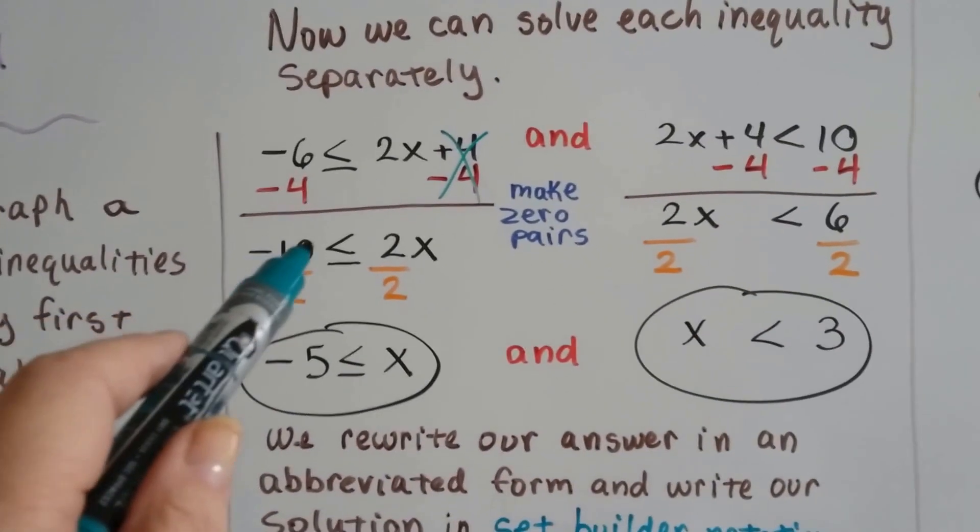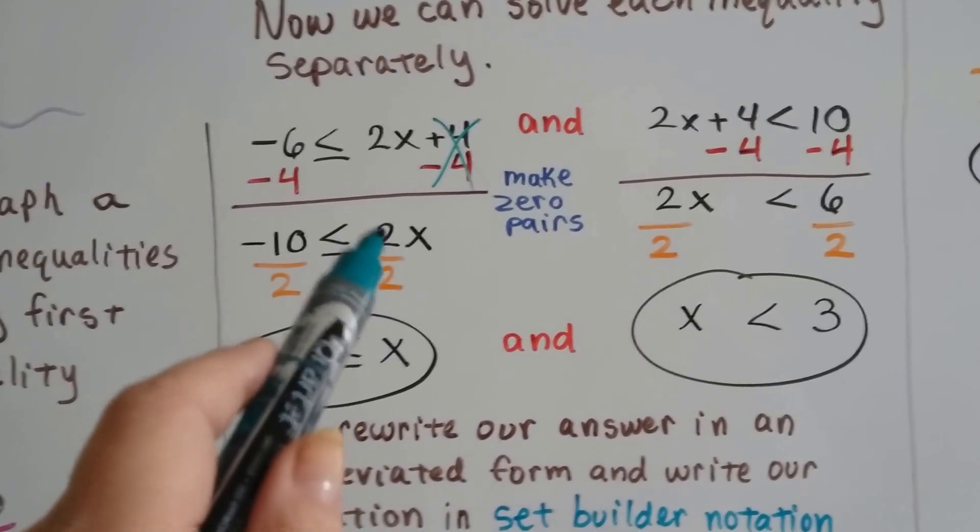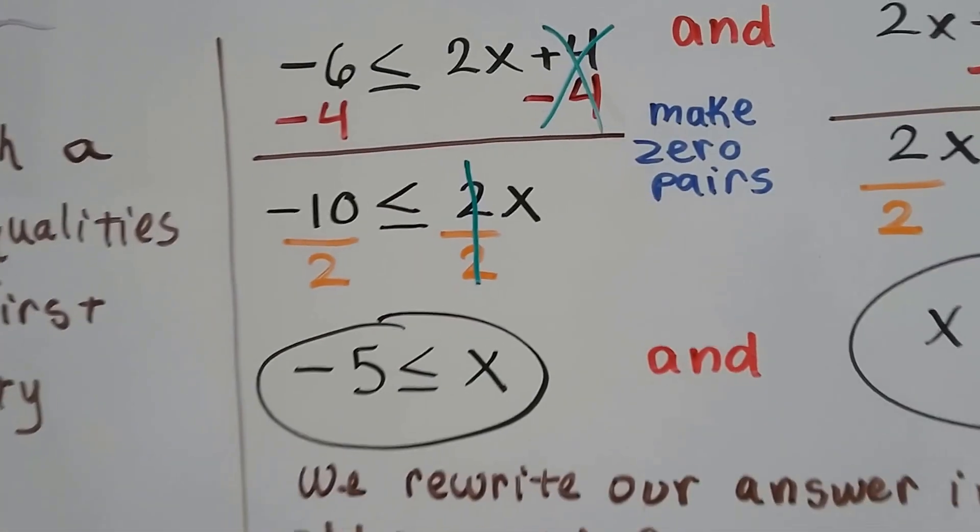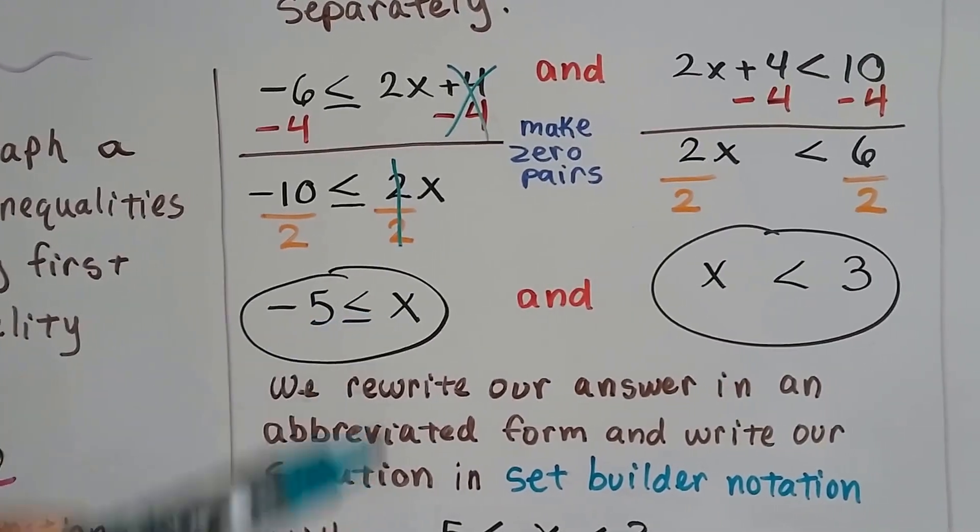Now we've got negative 10 is less than or equal to 2x. We can divide both sides by this coefficient 2, create our buddy the invisible 1, that identity property. And now we get negative 5 is less than or equal to x.